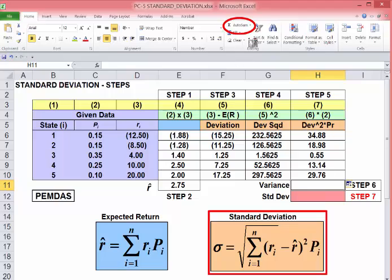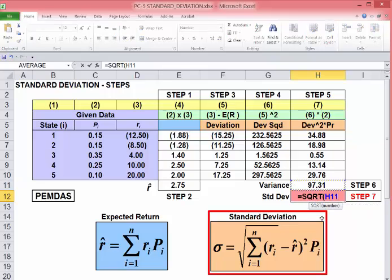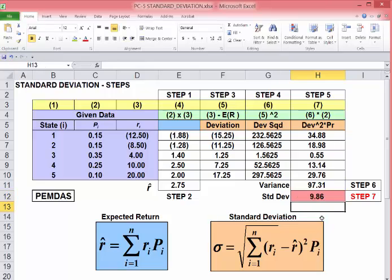Sum these up using AutoSum again. We have our variance. To get standard deviation, use the square root function and we have our square root 9.86.